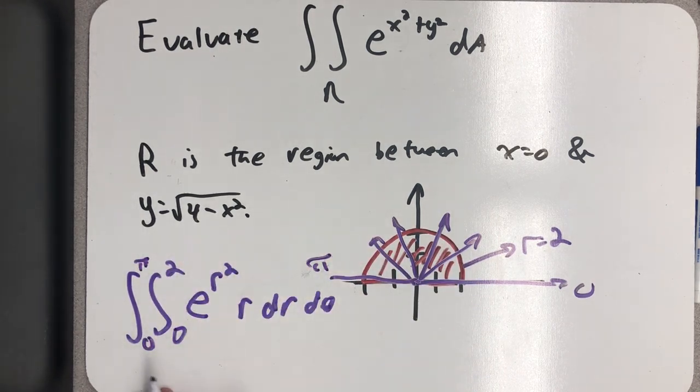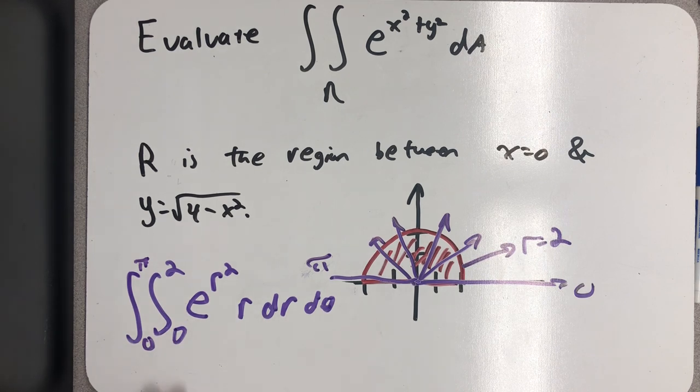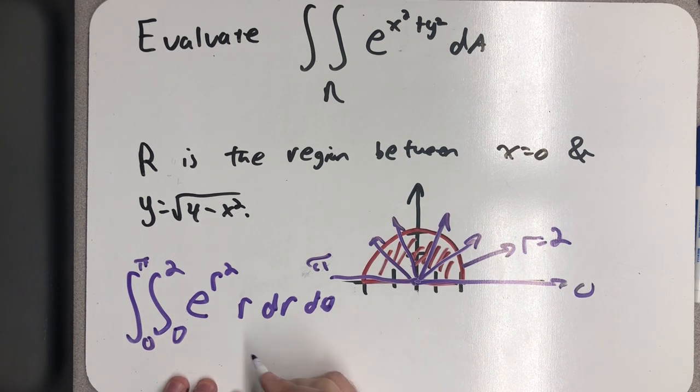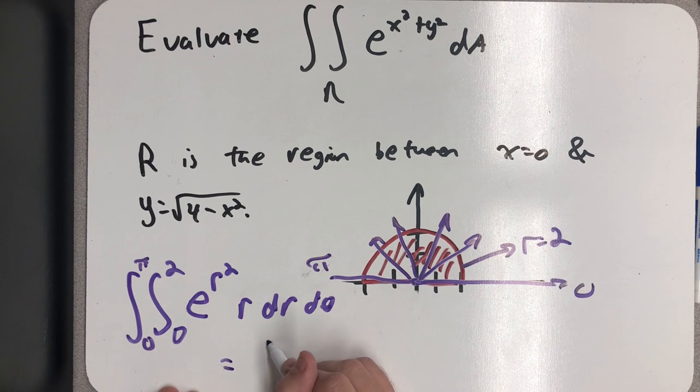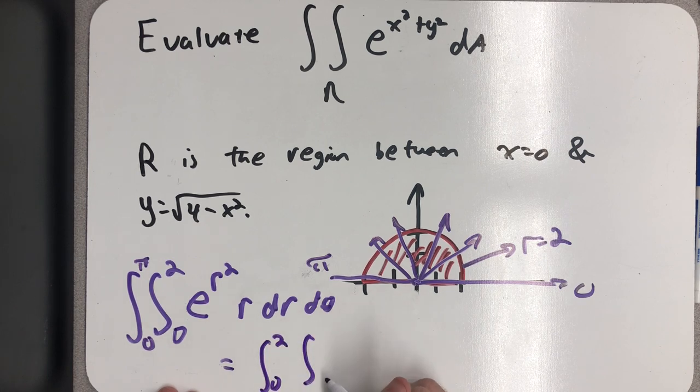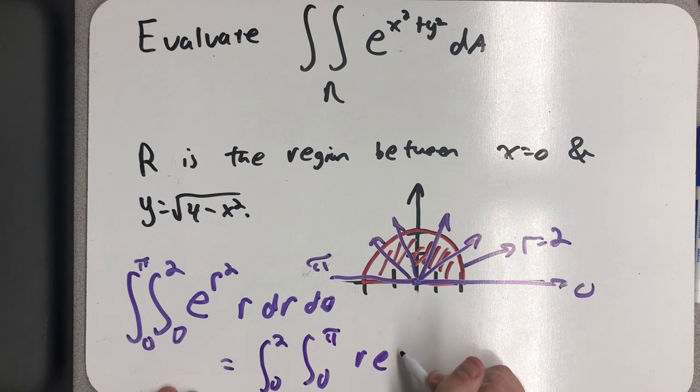Well, this is a very nice integral to deal with thinking about dR and d theta. Those are constants. I could actually pretend this was a rectangle, or I could use Fubini in its first form to swap the order of integration, so that I go from 0 to 2, and then 0 to pi of R, e to the R squared.